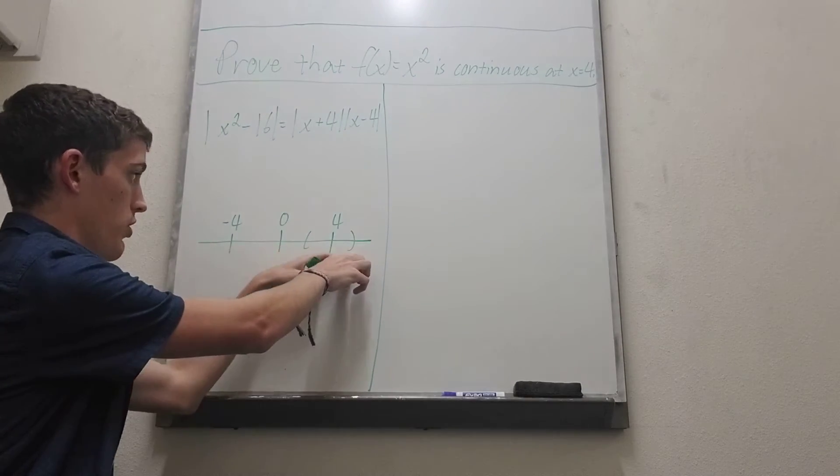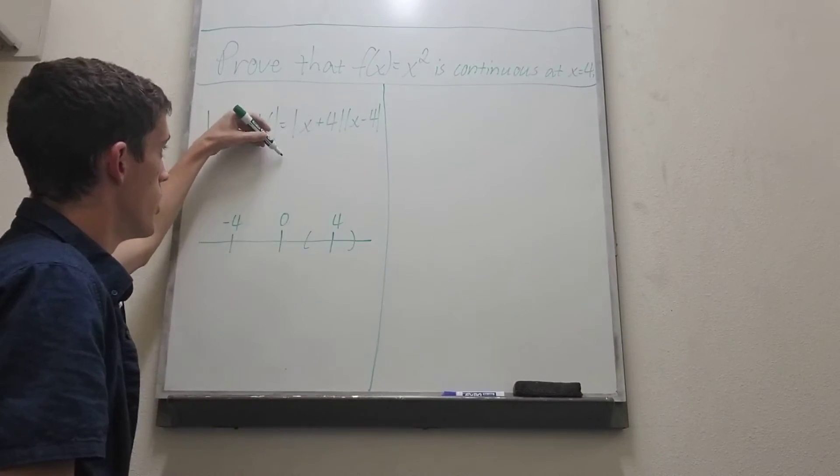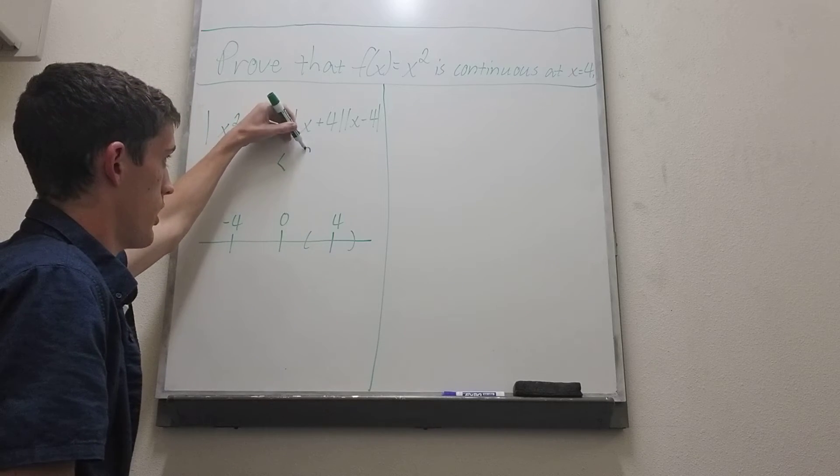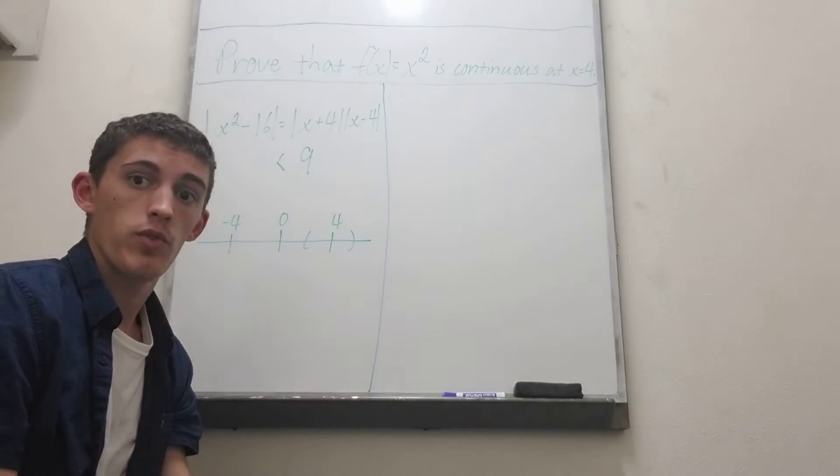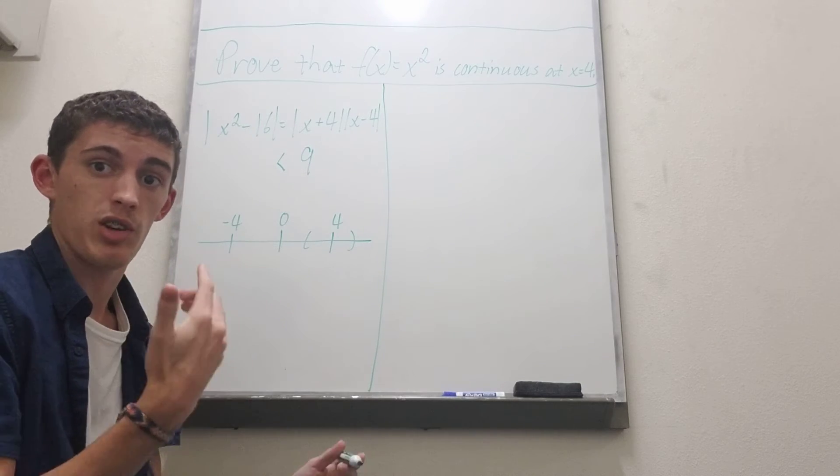So 4 plus 5 is 9. So this thing is less than 9, and then absolute value of x minus 4 that's going to be less than delta.